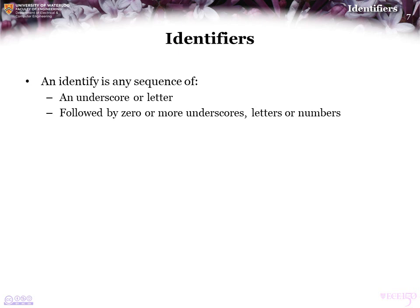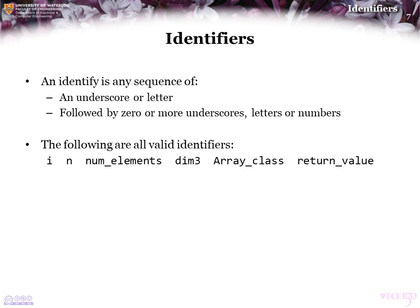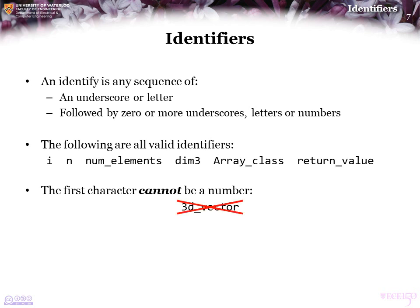An identifier is any sequence of an underscore or letter, followed by zero or more additional underscores, letters, or numbers. All of the following are completely valid identifiers: a single character, an abbreviation like num_elements, dim3, array_class, return_value. The first character cannot be a number — so you can use vector_3D, but you cannot use 3D_vector as an identifier. That is forbidden.